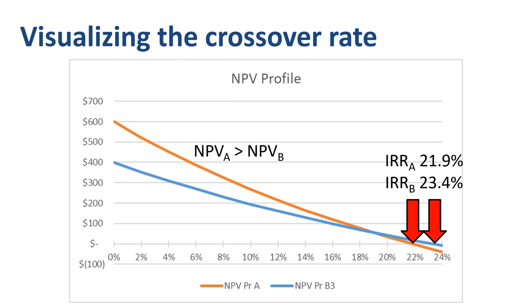Only for cases where the discount rate is higher than 19% do NPV and IRR both suggest favoring project B. When in doubt, NPV is more important than IRR in capital budgeting. If NPV and IRR don't point you in the same direction, apply crossover rate analysis to understand the NPV profiles.